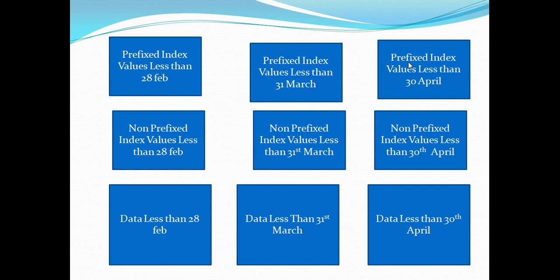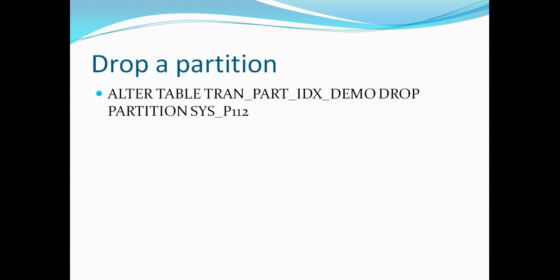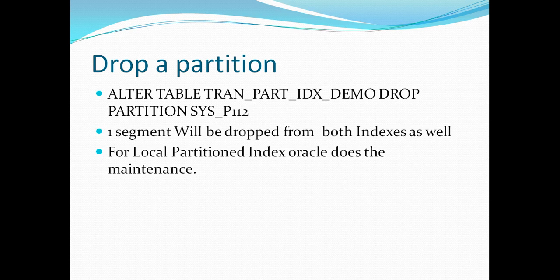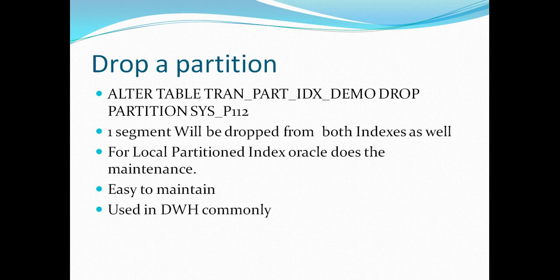For the prefixed index, a partition was created for values less than 28 February, another between 1st and 31st March, and the third from 1st to 30th April. This was done for both prefixed and non-prefixed indexes. One important thing: local partition indexes are automatically maintained by Oracle. As soon as we inserted data and multiple interval partitions were created, corresponding local partitions were also created automatically for the index. If I drop a partition from my table, it will drop a segment from both indexes as well.